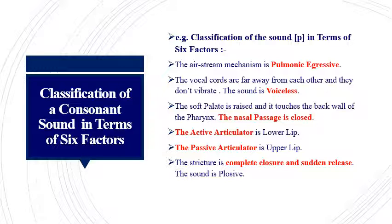When we articulate /p/, the lower lip is in movement — the lower lip touches the upper lip. The upper lip remains passive, so the upper lip is the passive articulator and the lower lip is the active articulator. Now, what is the stricture involved?